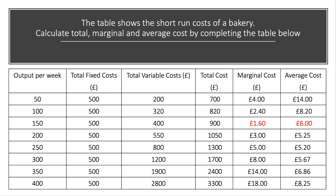Going back to our table, we see this at output level 150. If we go up from 100 to 150, the marginal cost is £1.60 per baguette, and that's lower than the previous average of £8.20 — that drags the average down to £6. That's true in the next batch as well: the marginal cost is £3, and that drags the average down to £5.25. Further down the table, that extra 50 units has a marginal cost of £8 each — higher than the previous average of £5.20 — driving the average cost up from £5.20 to £5.67. By the time the marginal cost gets to £18 for that final batch, it has quite a substantial effect, lifting average cost from just under £7 to over £8.